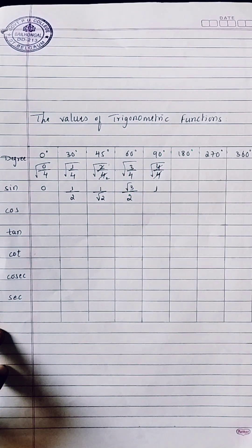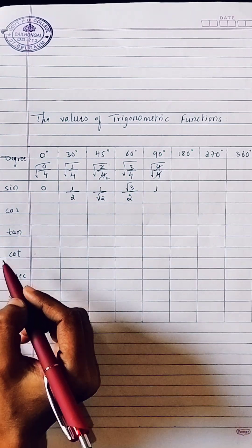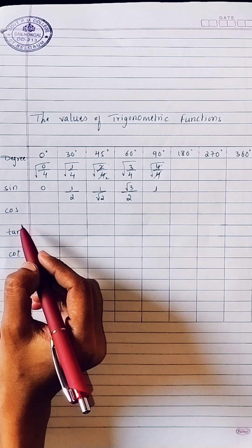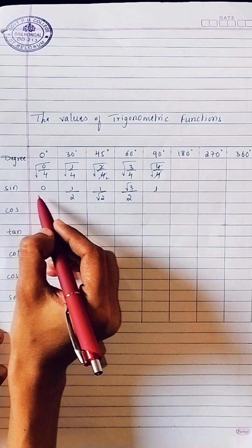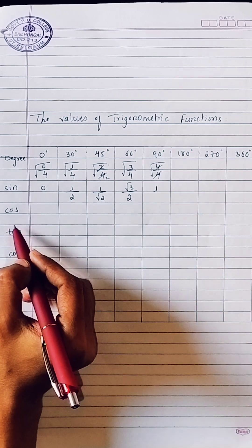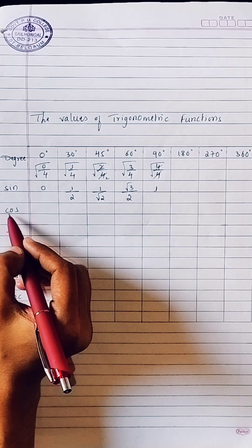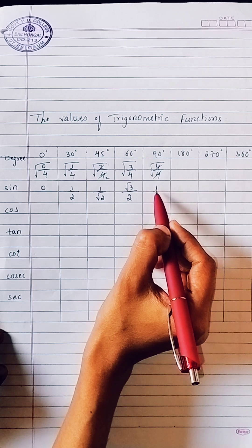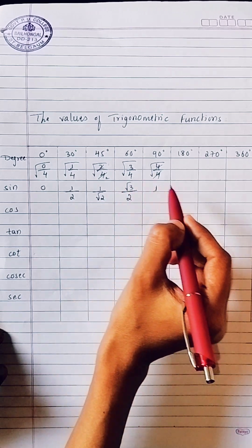For cos theta, we reverse the order — we go back the same way we came. So cos gives the values in reverse: 1, √3/2, 1/√2, 1/2, and 0 for 0°, 30°, 45°, 60°, and 90°.